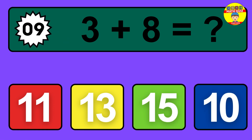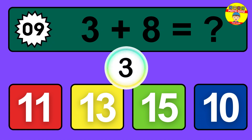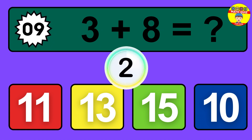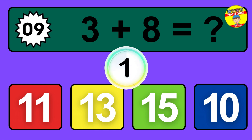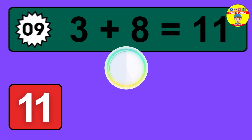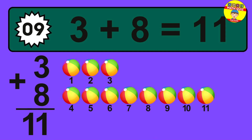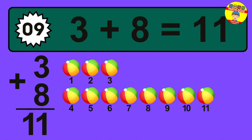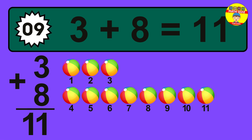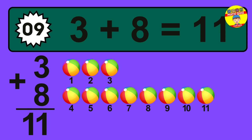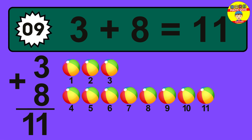Question 9. 3 plus 8 equals what? The answer is 3 plus 8 is 11. Let's count it: 1, 2, 3, 4, 5, 6, 7, 8, 9, 10, 11.